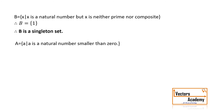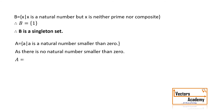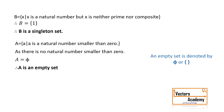The next example: set A contains a such that a is a natural number smaller than zero. Natural numbers start from 1, so none of the natural numbers is actually less than zero. There is no natural number smaller than zero, and hence A does not contain any element. So A can be termed as an empty set. The empty set is denoted by the Greek alphabet phi (∅), or by brackets with no element in between.